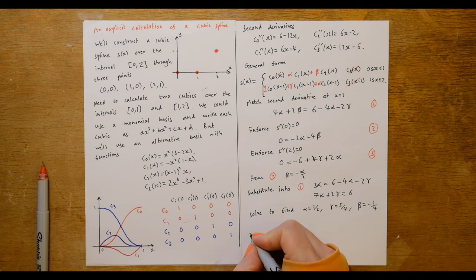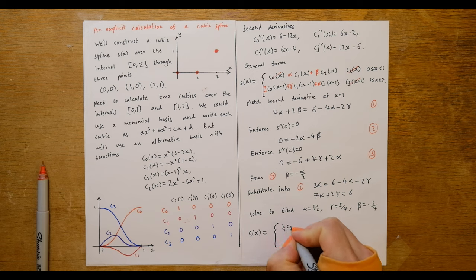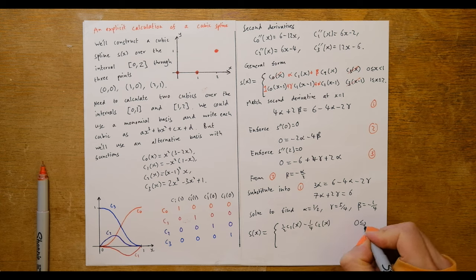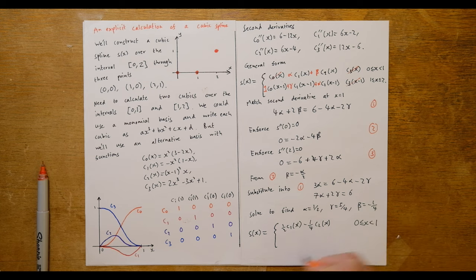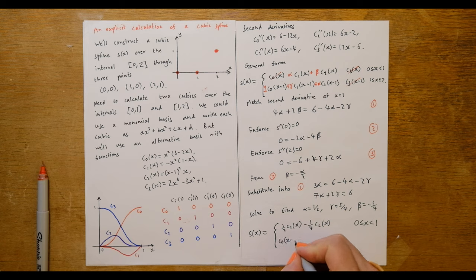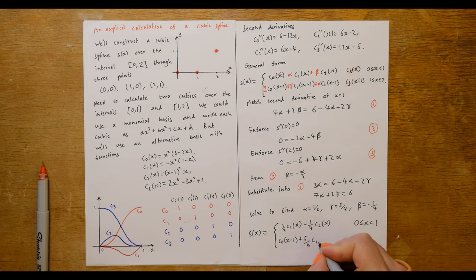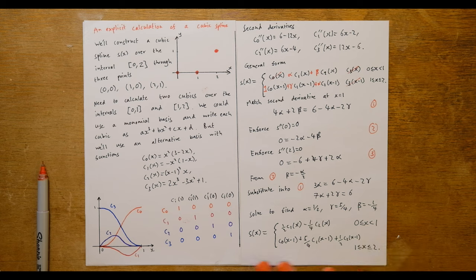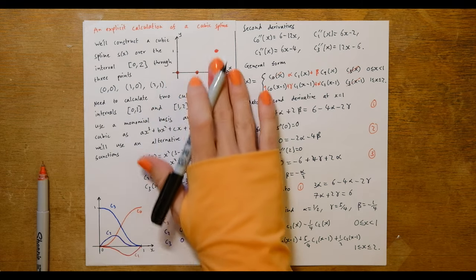Our complete solution for the spline is: s(x) = (1/2)c1(x) - (1/4)c2(x) for x in [0,1], and s(x) = c0(x-1) + (5/4)c1(x-1) + (1/2)c2(x-1) for x in [1,2]. That gives us our complete unique solution, and we'll now take a look at this on the computer to compare how it works in relation to the data points.